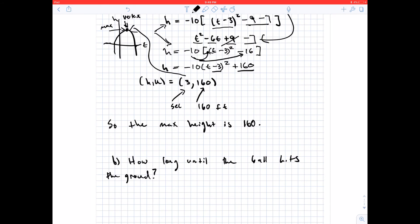Now, for part B, how long until the ball hits the ground? Well, we know when the ball hits the ground that the height here, h is equal to 0. If you think about that, when you throw a ball in the air and it hits the ground, the height of the ball is 0, right?